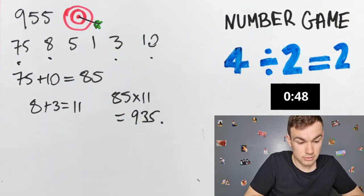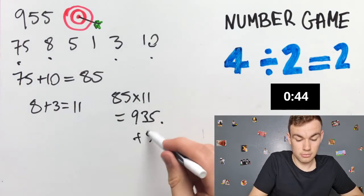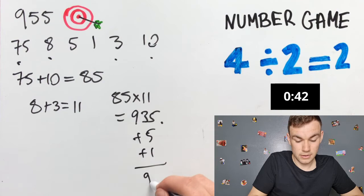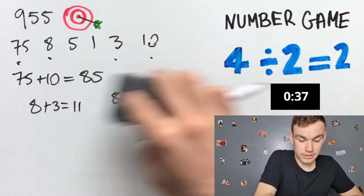1 minute left. Add 5, add 1. 941. So, 14 away. Difficult.